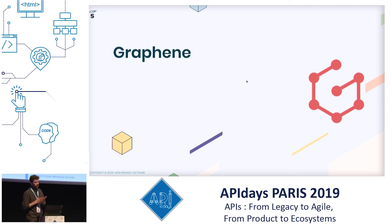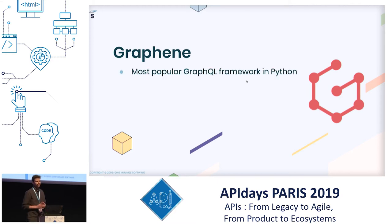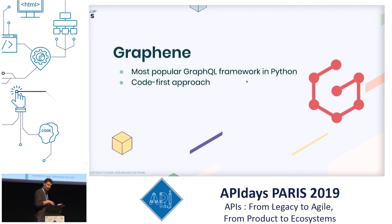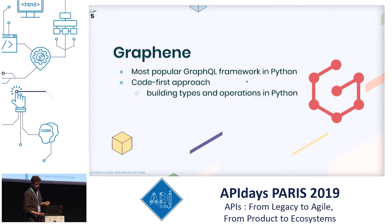Our project was built in Django and Python, so when we started building GraphQL there was only one framework available: Graphene. It's still the most popular one. It uses a code-first approach, which means we write Python code and from that Python code we generate the schema.